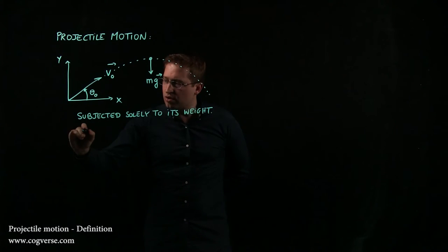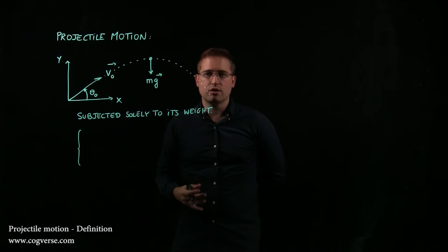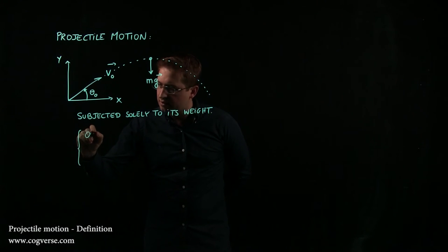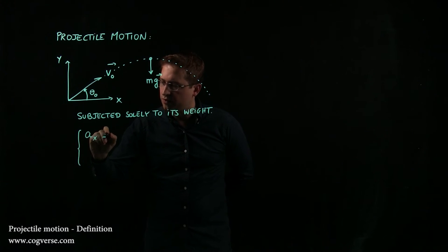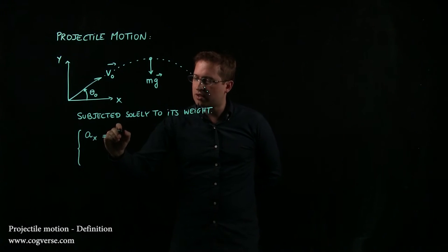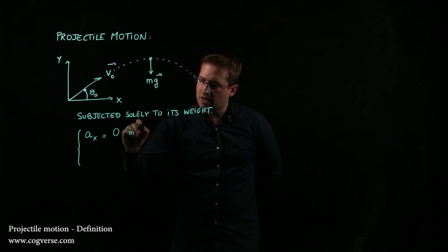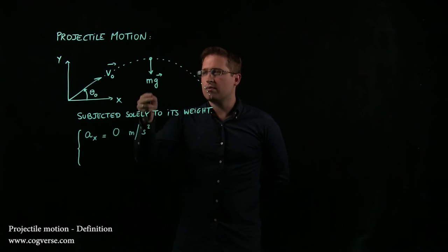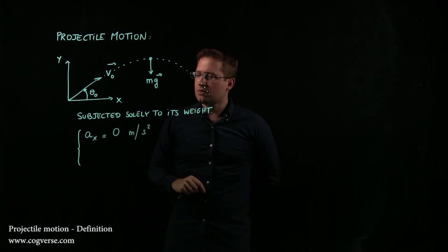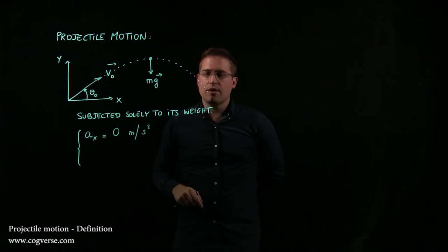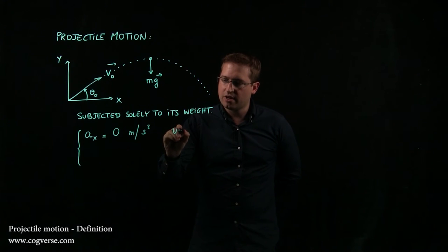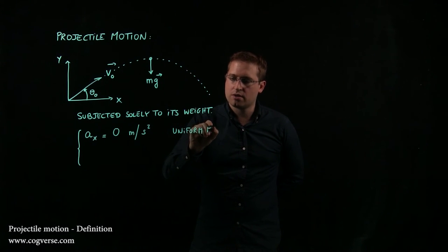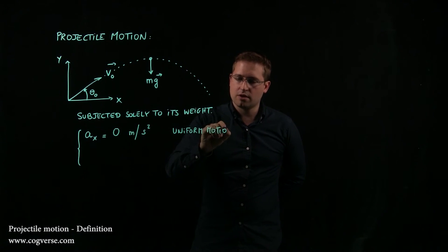Now if that's true then there are two consequences that you need to know that will hold for projectile motion. The acceleration horizontally is going to be zero. There will be no horizontal acceleration because the only force there is is purely vertical and ax equals zero therefore means that we have uniform motion along x.